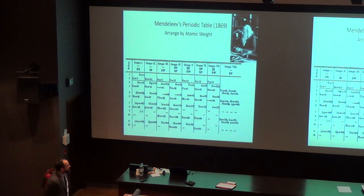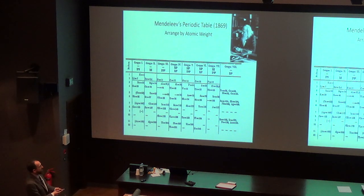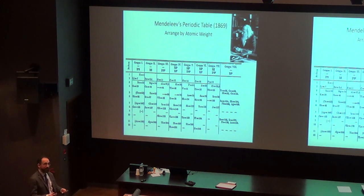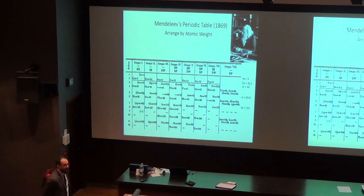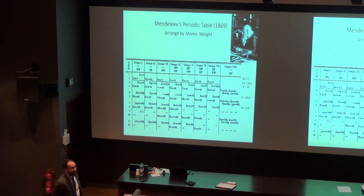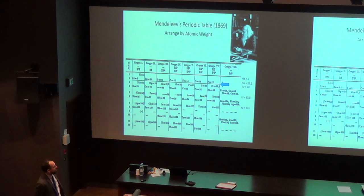Even Mendeleev didn't know if his table was complete. He would have known some things — for example, there's no element between silicon and phosphorus, because if there were, phosphorus would shift to the next column, and its chemistry wouldn't match. However, there's no way he would have known he might have missed an entire column. In fact, he did miss an entire column — no one had discovered the noble gases yet, so we had to insert helium, neon, krypton, and xenon. He also wouldn't have known if an entire row was missing.